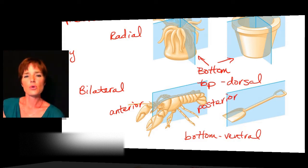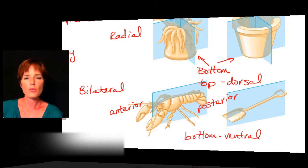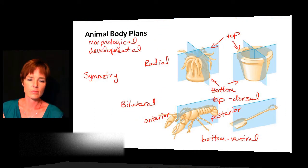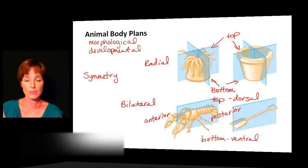So really there are three types of symmetry: we can have no symmetry at all, or what we call asymmetric, and then we have radial symmetry and bilateral symmetry. As humans we would be bilaterally symmetric, because we do have a top and a bottom and also the anterior and posterior side.